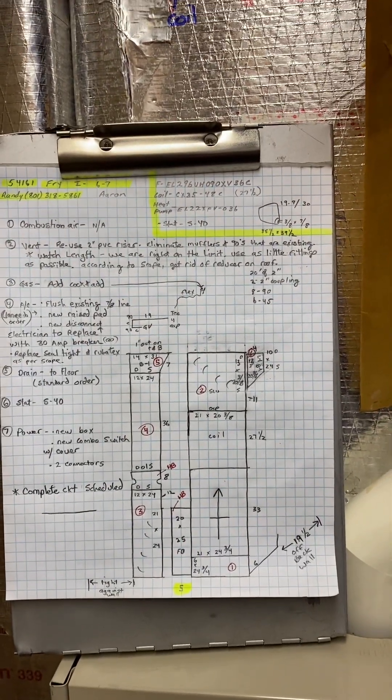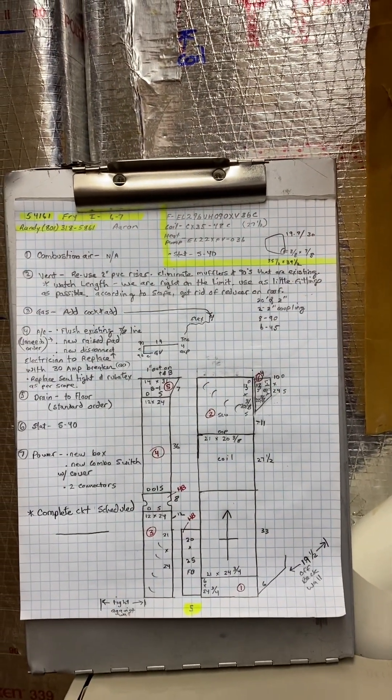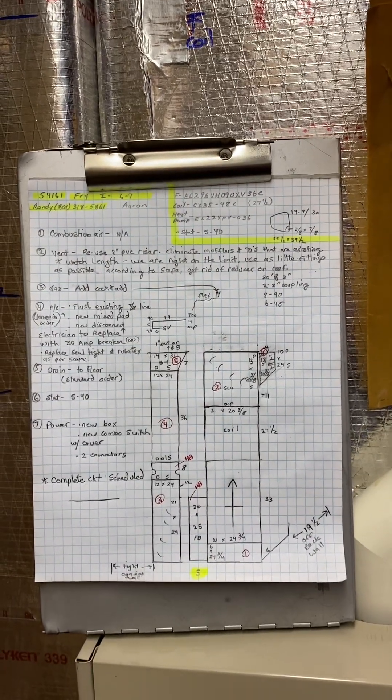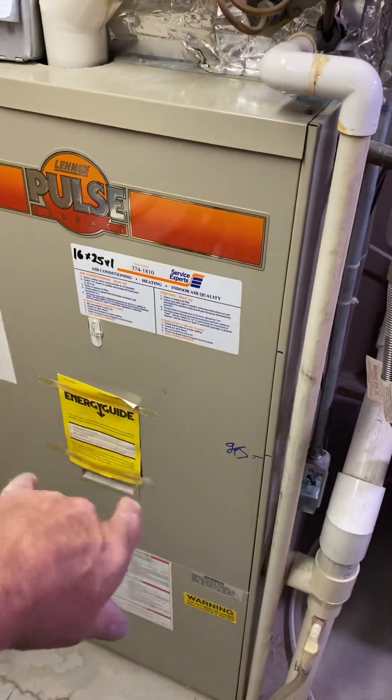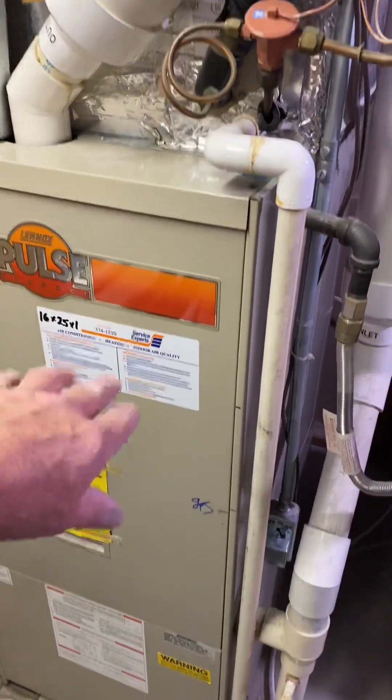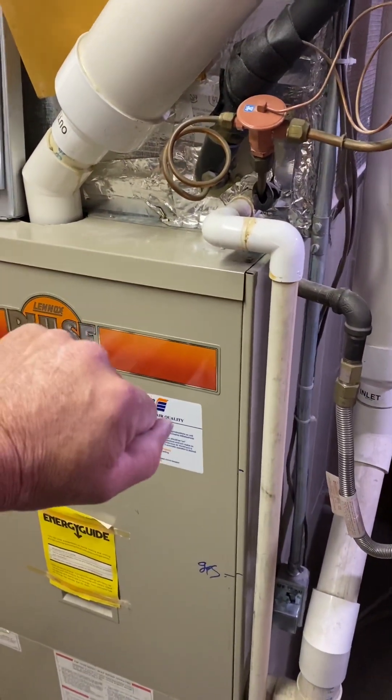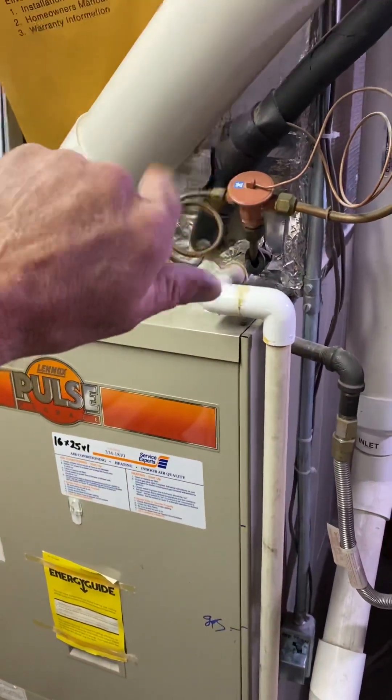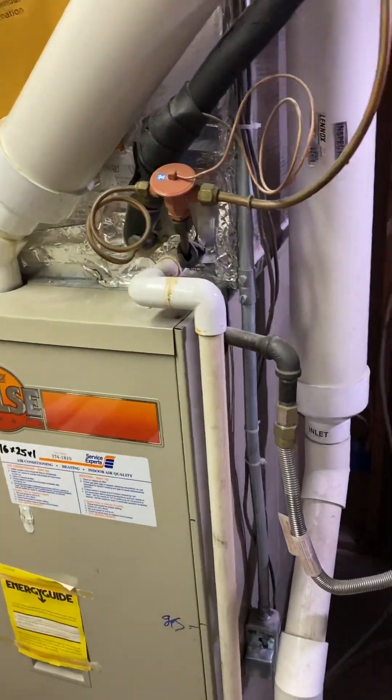Okay, this is on the Fry job, number 54161, installed on 6-7 by Aaron. So what we're doing is we're replacing this pulse furnace with a new high efficient furnace. I'm replacing the coil, replacing the AC with the heat pump.